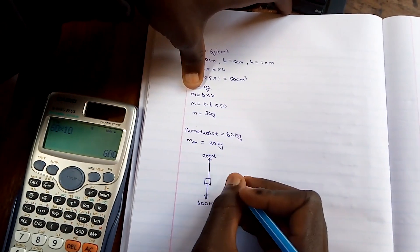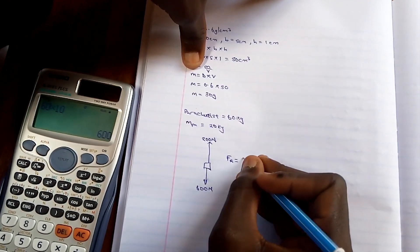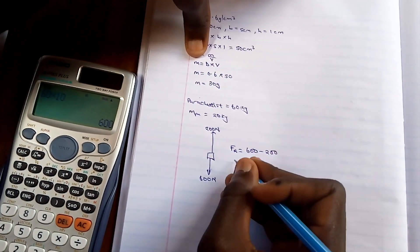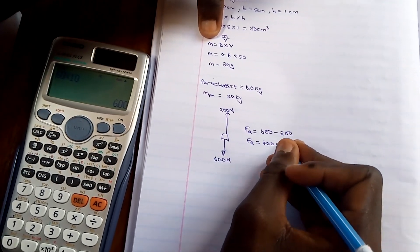So if we want to find the resultant, FR, which is the resultant force is equal to this 600 minus 200. Hence the resultant force will be equal to 400 newtons. So in this case, the answer is going to be B.